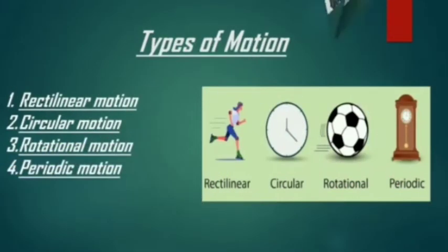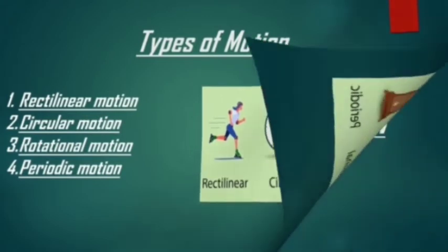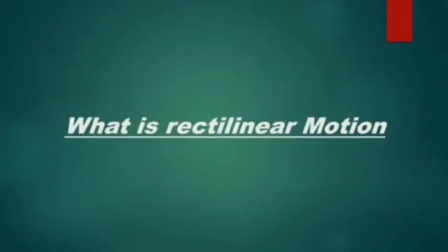Types of motion: rectilinear motion, circular motion, rotational motion, and periodic motion. What is rectilinear motion? Rectilinear motion is any motion in which an object takes a straight path.